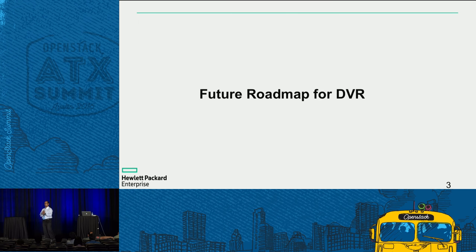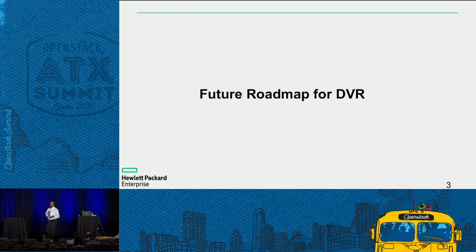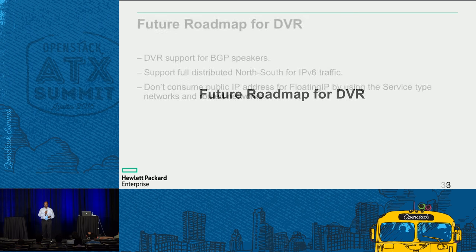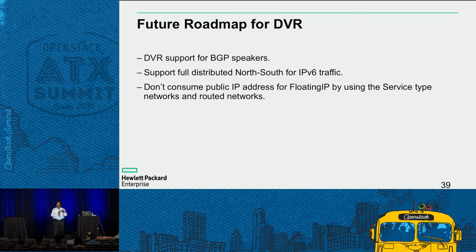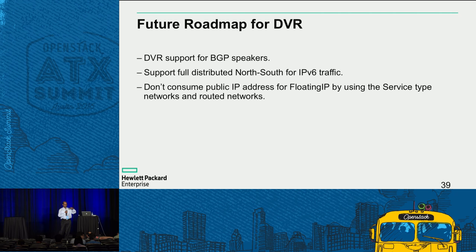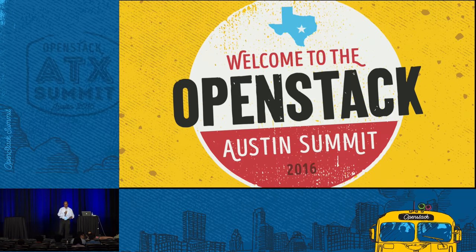On control plane performance, the community made changes to only send notifications to agents that need to know about specific events, rather than broadcasting to all agents. For agent sync-up with many routers configured, a throttle mechanism now fetches router information in batches rather than all at once. Thanks to Oleg from Mirantis for this work. For the Newton cycle, planned work includes BGP speaker support for DVR floating IPs and IPv6 north-south addressability from compute nodes.